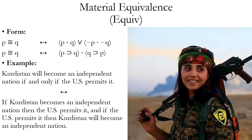Here's a natural language example. Kurdistan will become an independent nation if and only if the U.S. permits it. That's logically equivalent to: if Kurdistan becomes an independent nation, then the U.S. permits it, and if the U.S. permits it, then Kurdistan will become an independent nation.